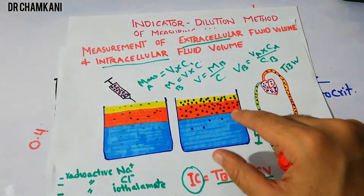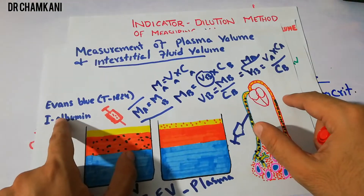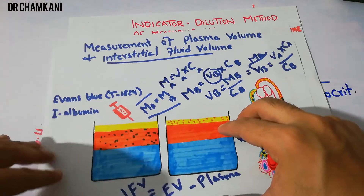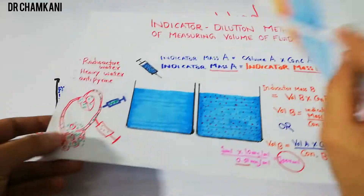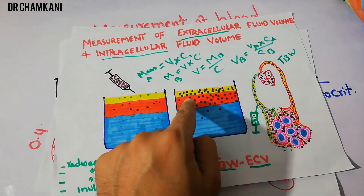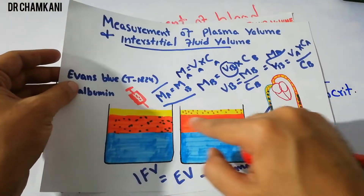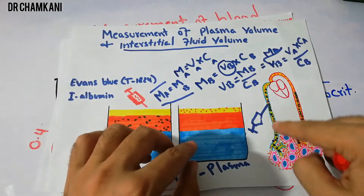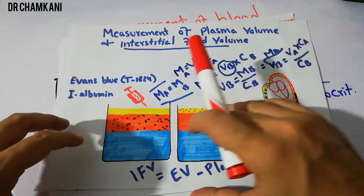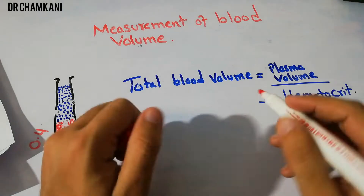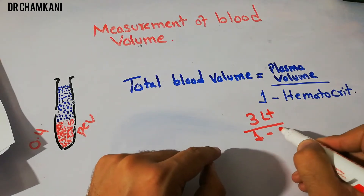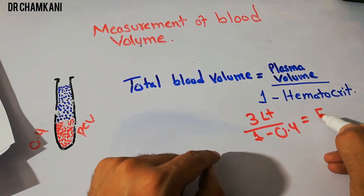If we use another indicator like radioactive iodine-labeled albumin or Evans blue, which only distributes in the plasma, we can measure plasma volume directly. Using this approach, plasma volume has been calculated to be 3 liters. Putting this into the blood volume equation: 3 divided by (1 minus 0.4) gives approximately 5 liters of blood.